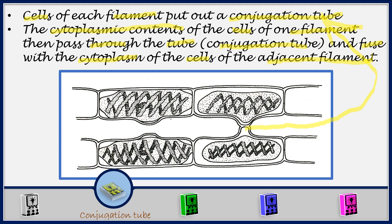The upper cell has sent out a conjugation tube, and the lower cell has also sent out a conjugation tube. The cytoplasm of the upper cell is going to flow through the conjugation tube into the other cell. When it enters, the two cytoplasms will fuse together — that is what we are describing here.